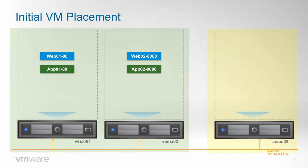We will use four VMs during the tests: two web VMs and two app VMs. VMs whose names finish in 01 are located on ESXi1, while VMs whose names finish in 02 are located on ESXi2. Also, VMs with the appendix dash-80 have a web server listening on port 80, while VMs with the appendix dash-8080 have a web server listening on port 8080.